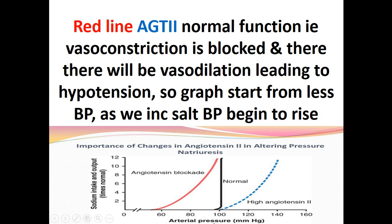The red line shows the effect of blocking angiotensin 2 by giving ACE inhibitors. With no angiotensin 2, the vasoconstrictor effect is absent and there is vasodilation leading to hypotension — blood pressure is low. The graph starts from a very low blood pressure, and if you increase salt intake, blood pressure will begin to rise in these patients.